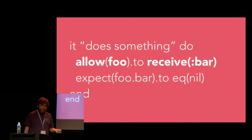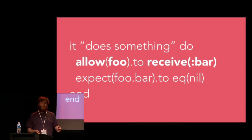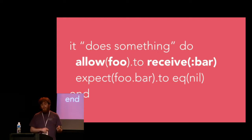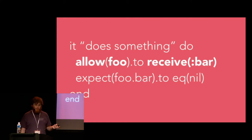Stubs are our simpler form of method replacement — they're not actually testing that anything happens. Let's imagine we've written this test: it does something, allow foo to receive bar, then expect foo.bar to eq nil. This test should pass because we haven't specified a return value, so RSpec will choose the simplest possible return value, which is nil. The parts most important to the mechanics of this test are the allow foo and the receive bar expressions.